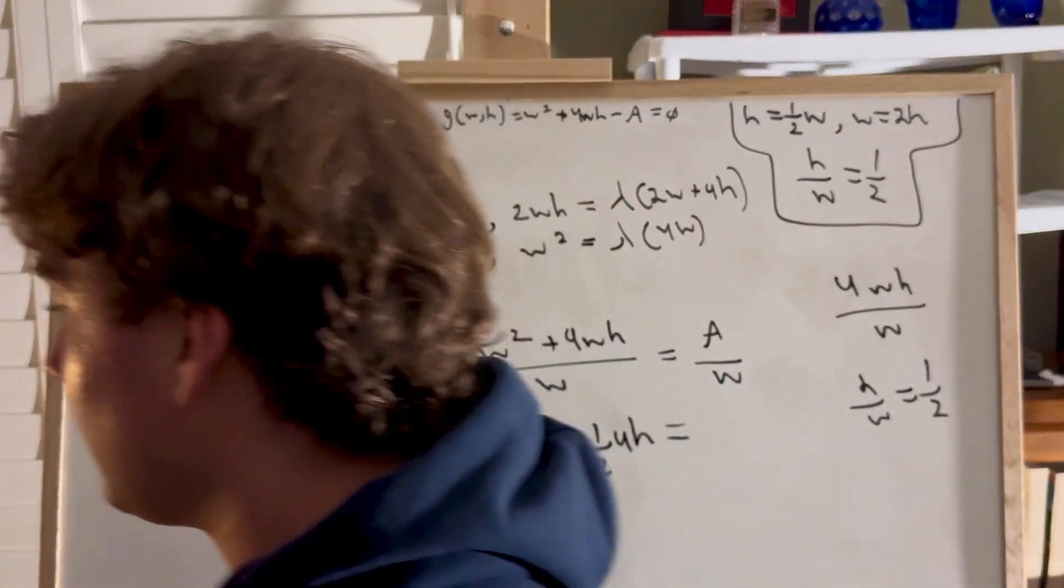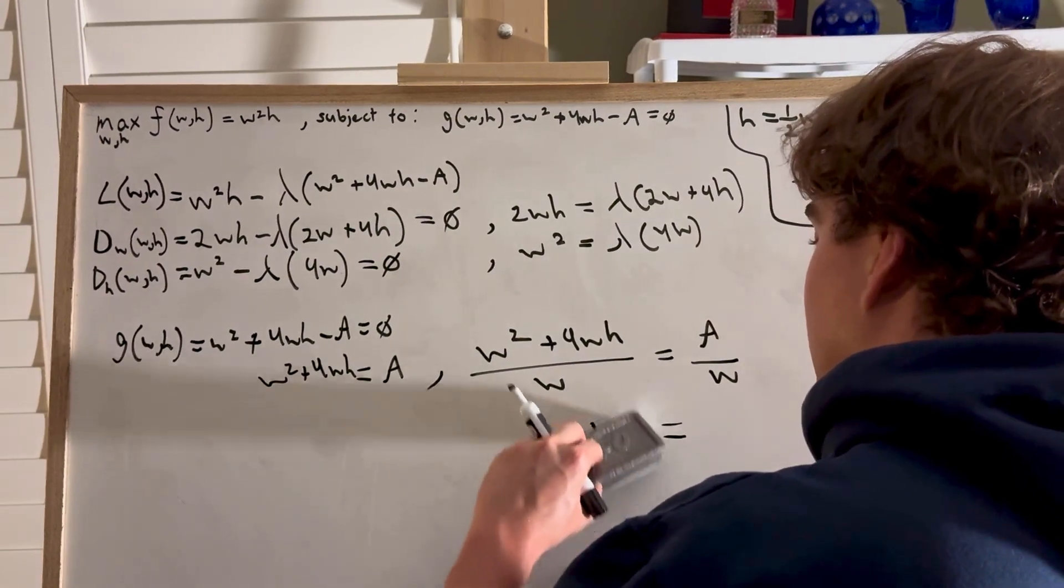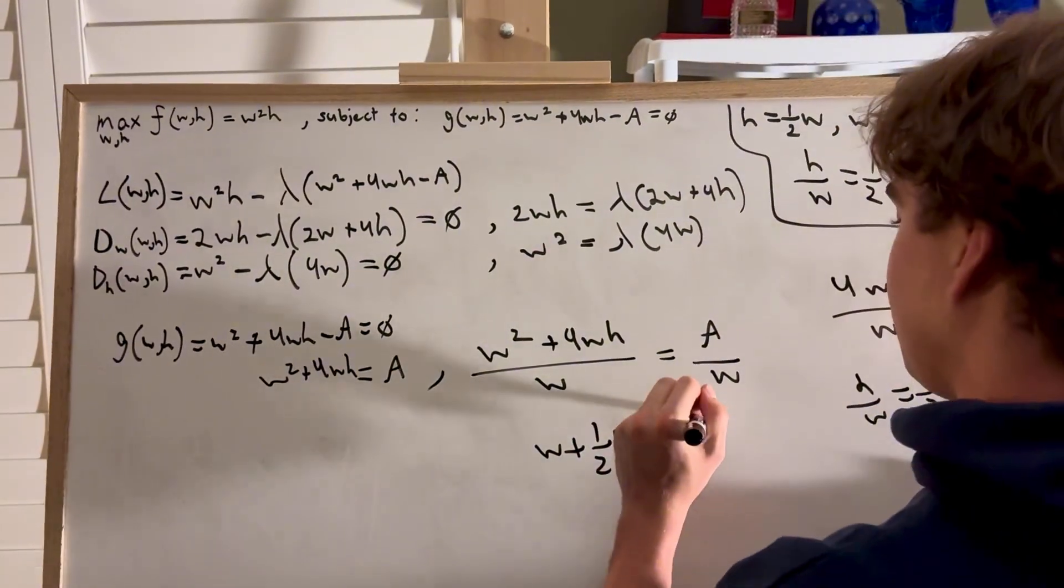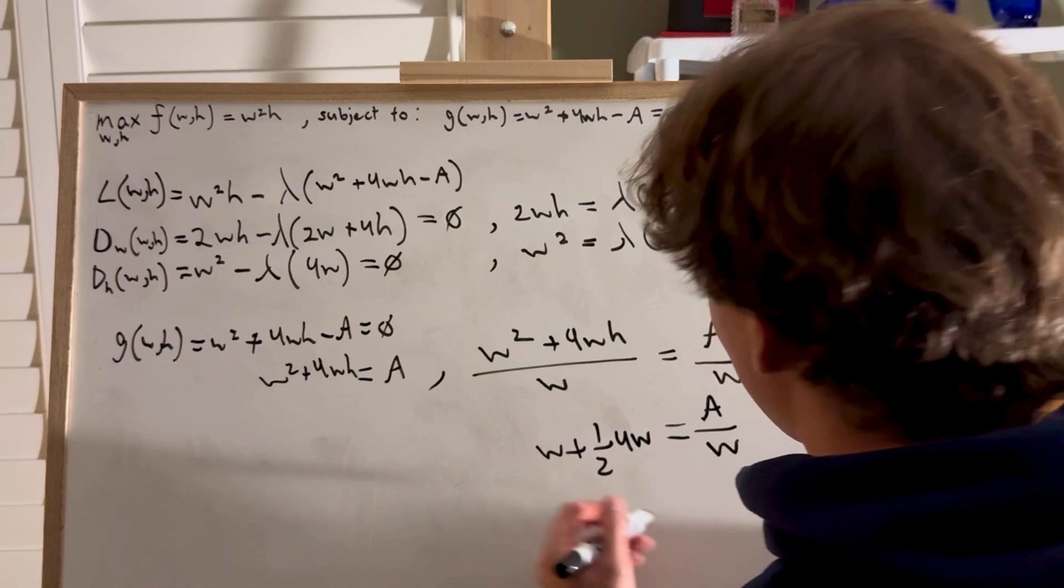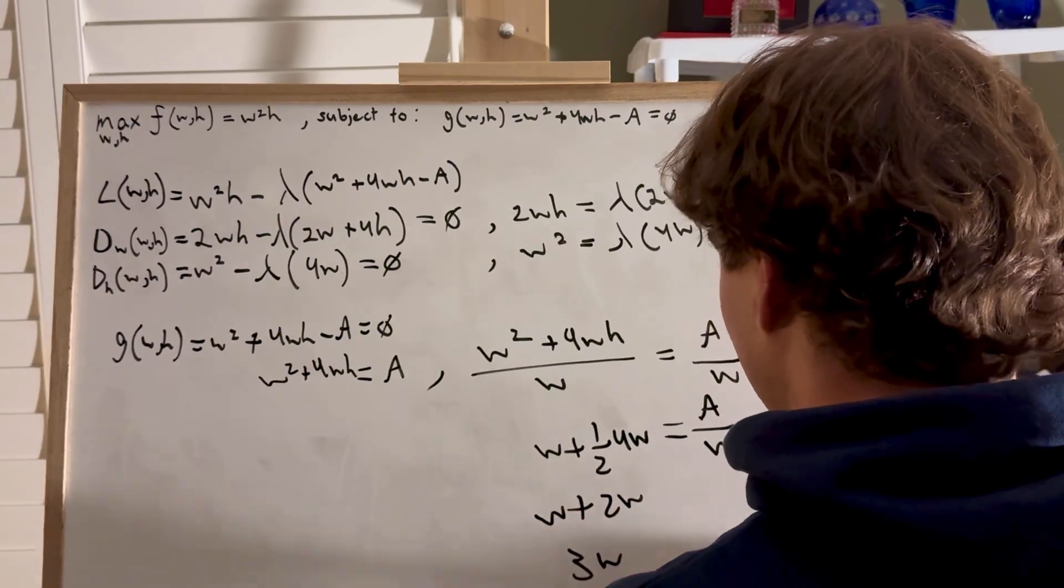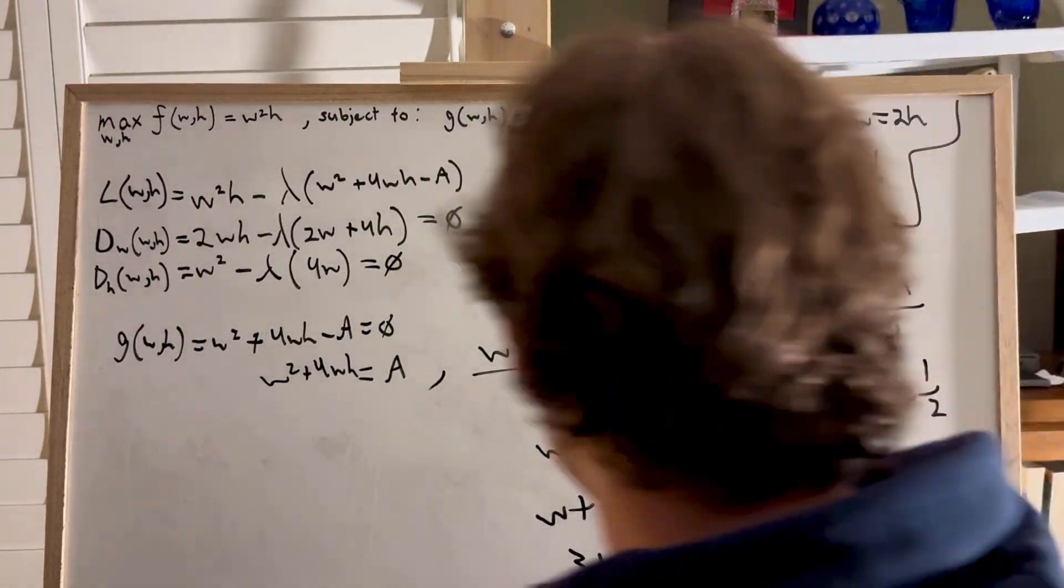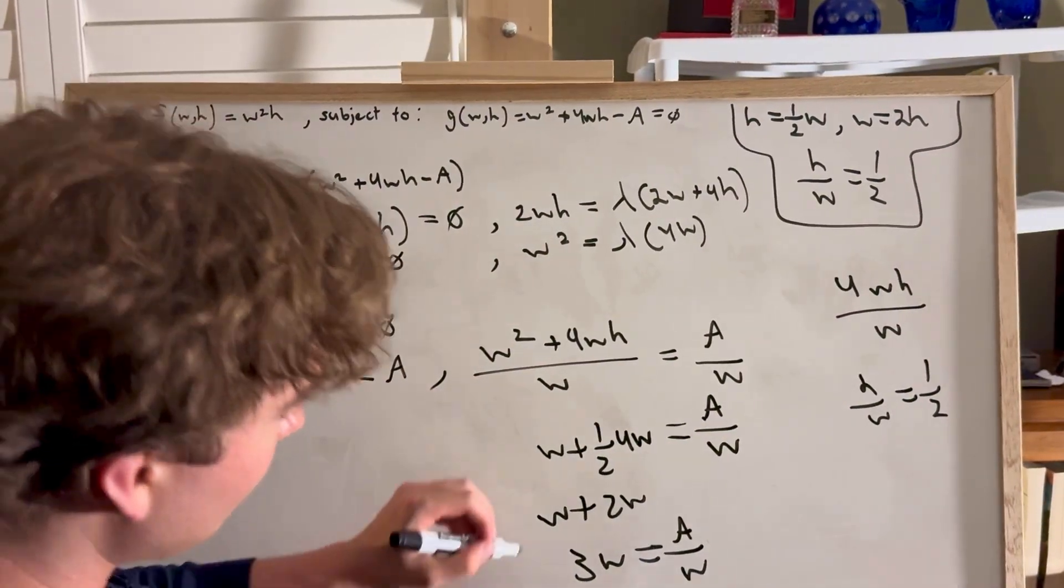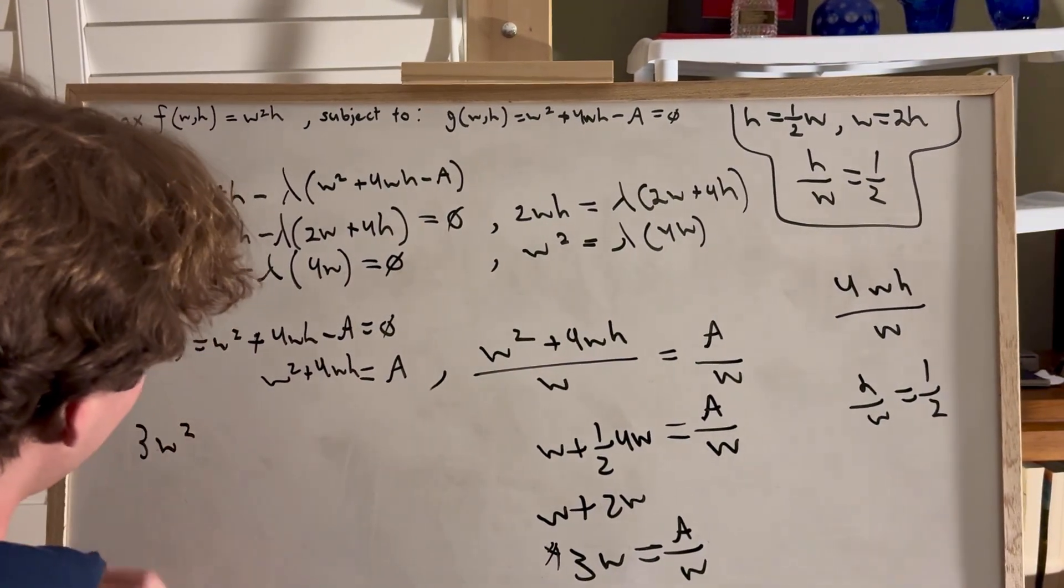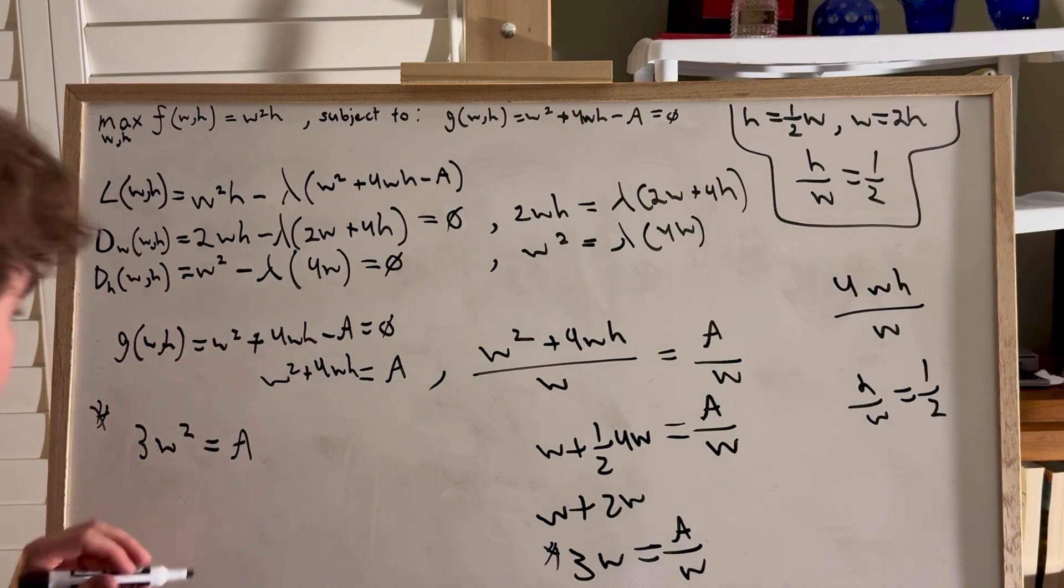We know that h over w equals 1 half. And we have h over w here. So all we're going to do, to make this as simple as possible, is we're going to make this w plus w plus 1 over 2 for h. Sorry, w. Oh my gosh. Raise your hand if I'm losing my mind. Raise your hand if I've lost it. Well, this isn't that hard. Plus do w. This is 3w.